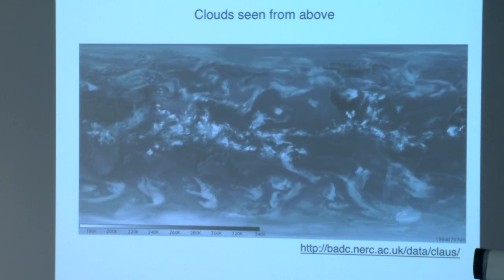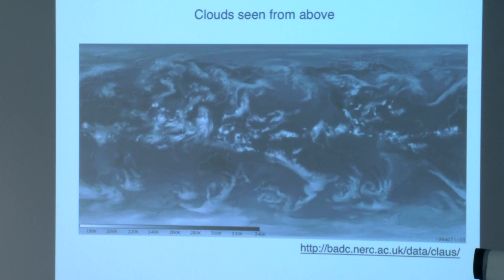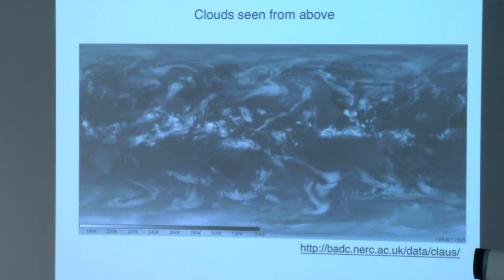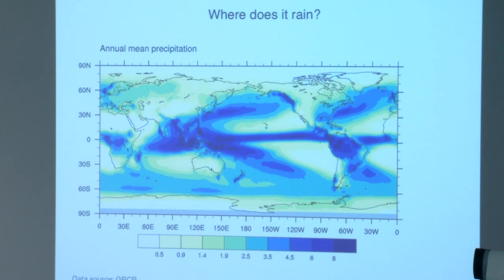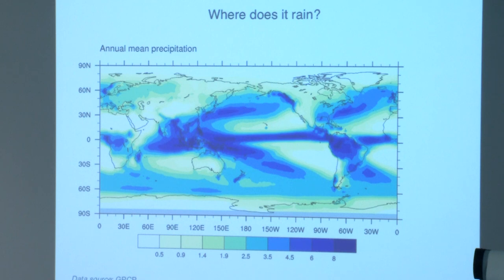We do have measurements of precipitation, although precipitation remains a very hard quantity to measure, model, and predict. We have global maps of precipitation. Here is a global map showing the long-term annual mean precipitation over Earth's surface. Blue is intense rainfall. We see how most intense rainfall tends to be concentrated in very meridionally narrow, longitudinally extended rain belts over the oceans—the features we usually call intertropical convergence zones, or ITCZ. Intense rainfall is also seen over subtropical land masses, which we will see is really the manifestation of a strong seasonality of precipitation there.